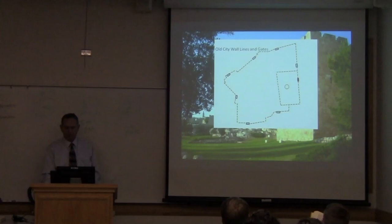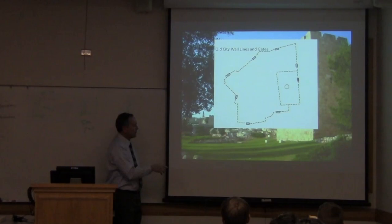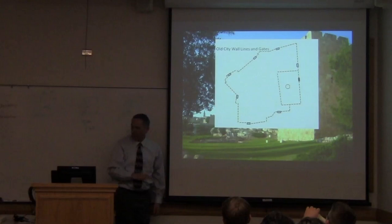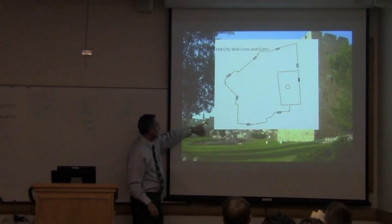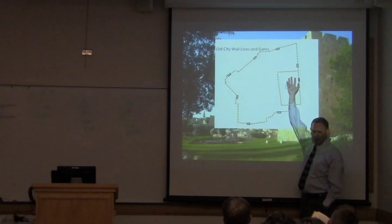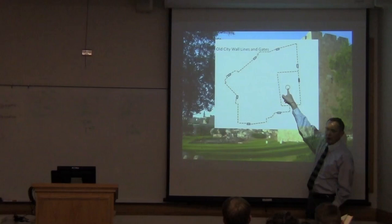The old city itself is shaped something like this if you were a bird and could see it from the air. There are gates in the city walls — the Joppa Gate, Damascus Gate, Herod's Gate, Lion's Gate, and the closed gate we call the Golden Gate. The ancient Temple Mount — the mount of the house of the Lord — was the home of Solomon's Temple, and later the Temple of Herod. In the 7th century AD, after the Muslims conquered Jerusalem, they built the Dome of the Rock on the site of the ancient Temple of Solomon.